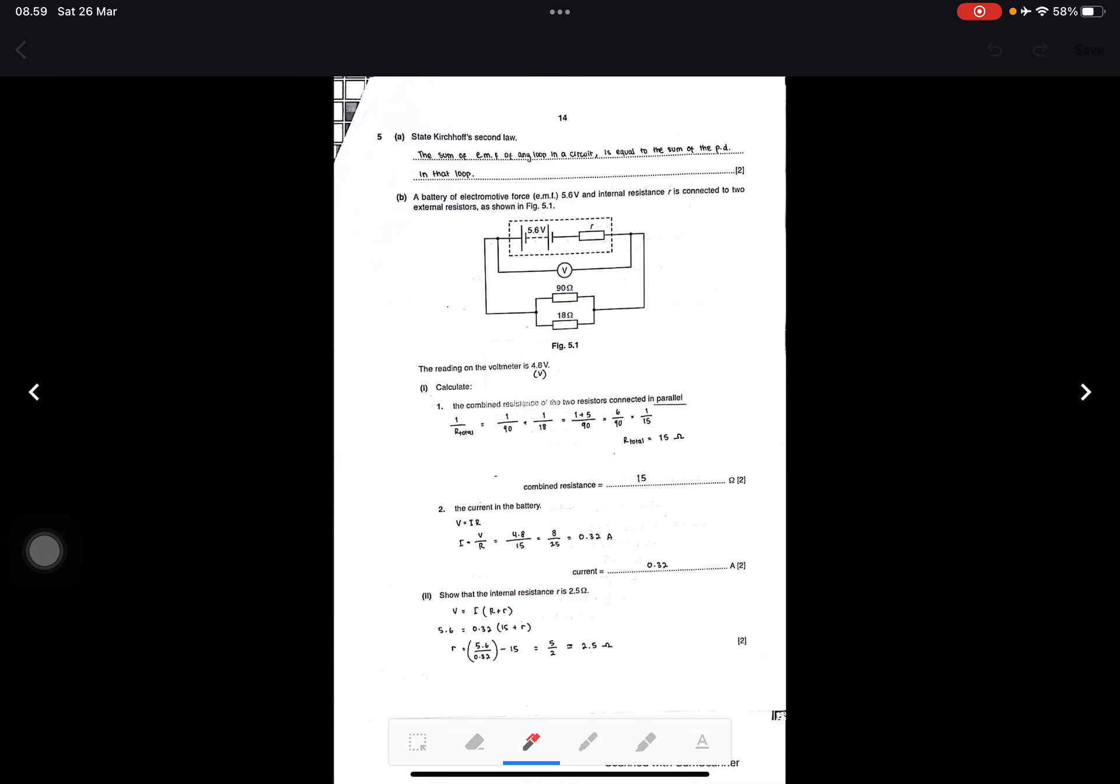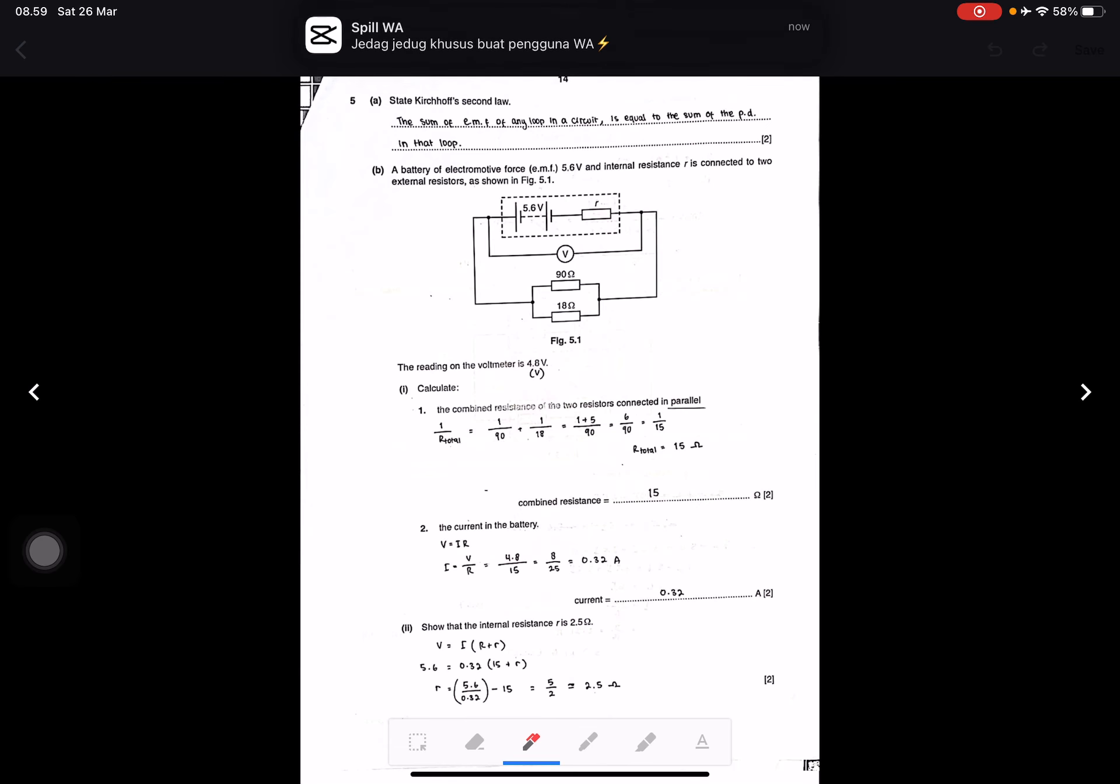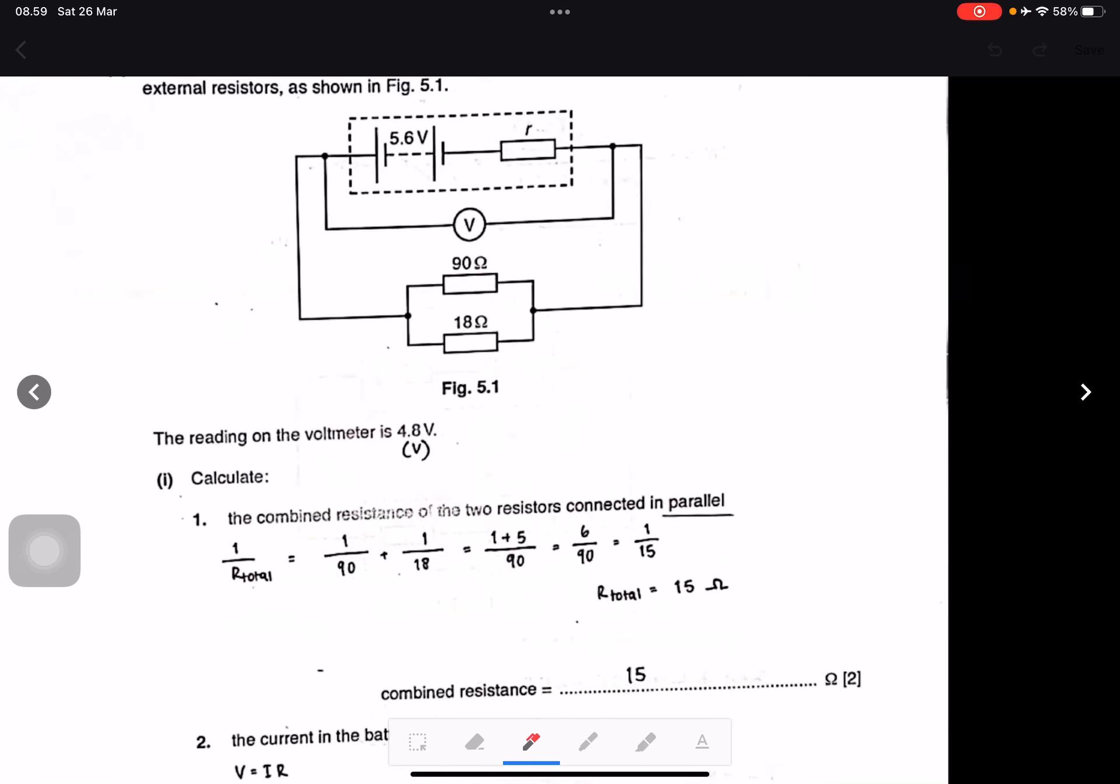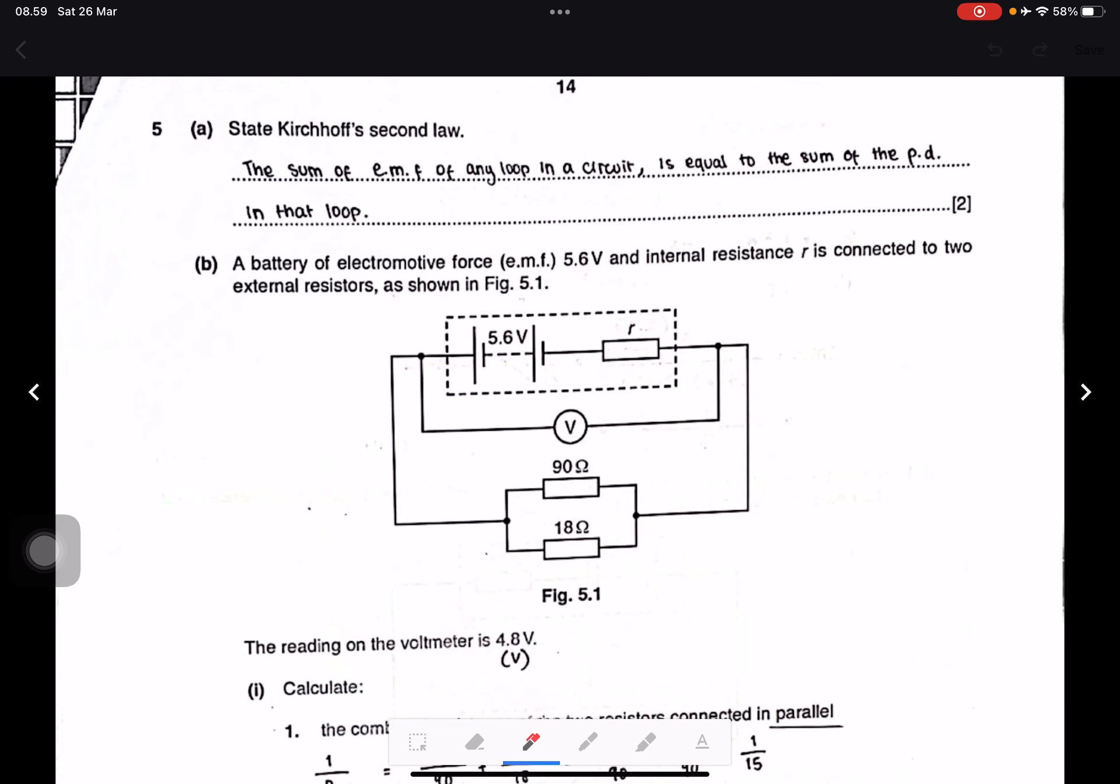Question five is about electricity. State Kirchhoff's law. Kirchhoff's law is: sum of EMF in any loop circuit is equal to sum of the PD in the loop. Yes, correct.